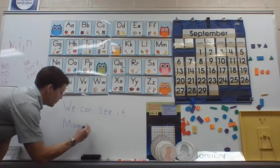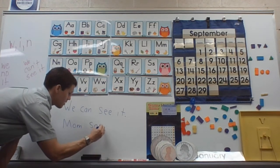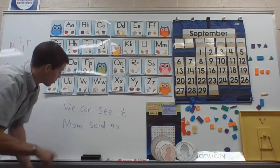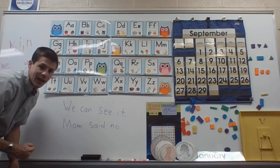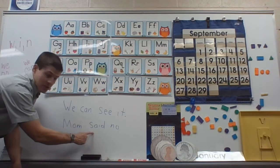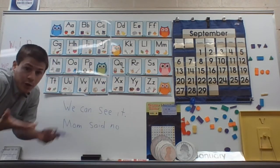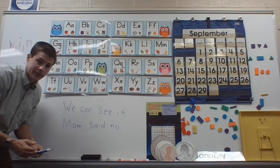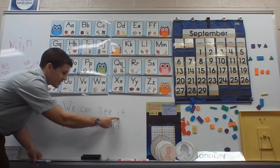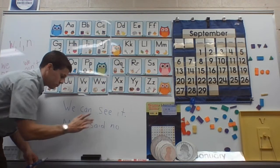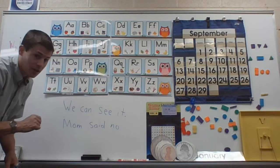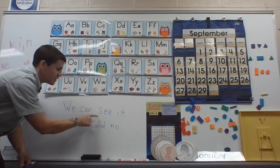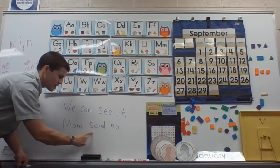Mom said no. Mom said no. Everybody read that with me. Mom said no. I don't know why she said no, but she did, and you know what? Mom's no best. Let's read our two sentences together. Are you ready? We can see it. Mom said no. Let's do it one more time, because that's a lot. Are you ready? Let's read together. We can see it. Mom said no.